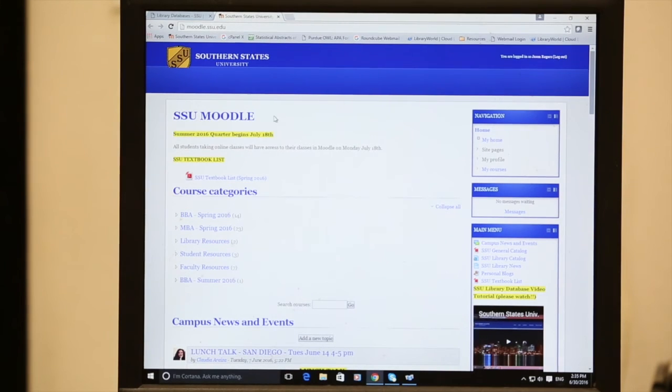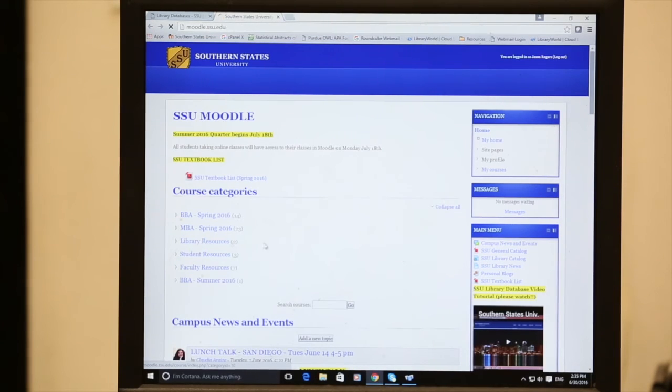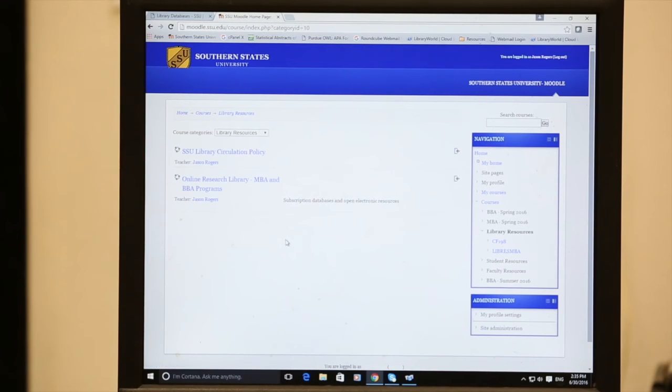This is the Moodle homepage. This is how mine looks when I'm logged in. Yours will look very similar depending on your classes and how you set it up. And there is this link to library resources. If you click that, it will take you to a page similar to the one on our website where you have options on what to do. You can look at our circulation policy if you want. But what you want is the online research library.